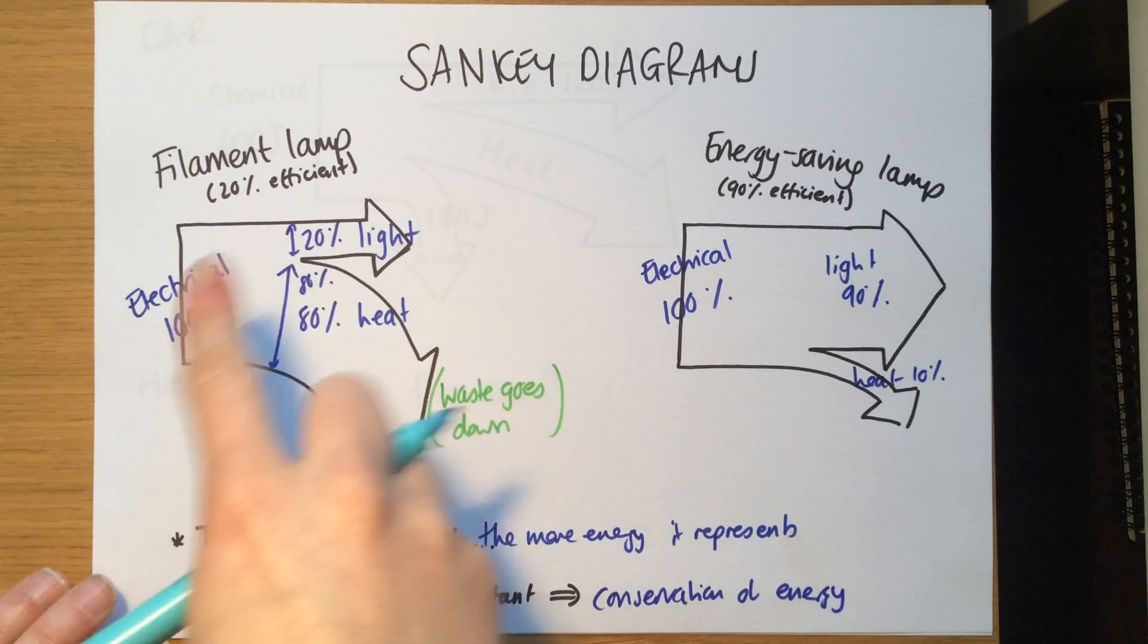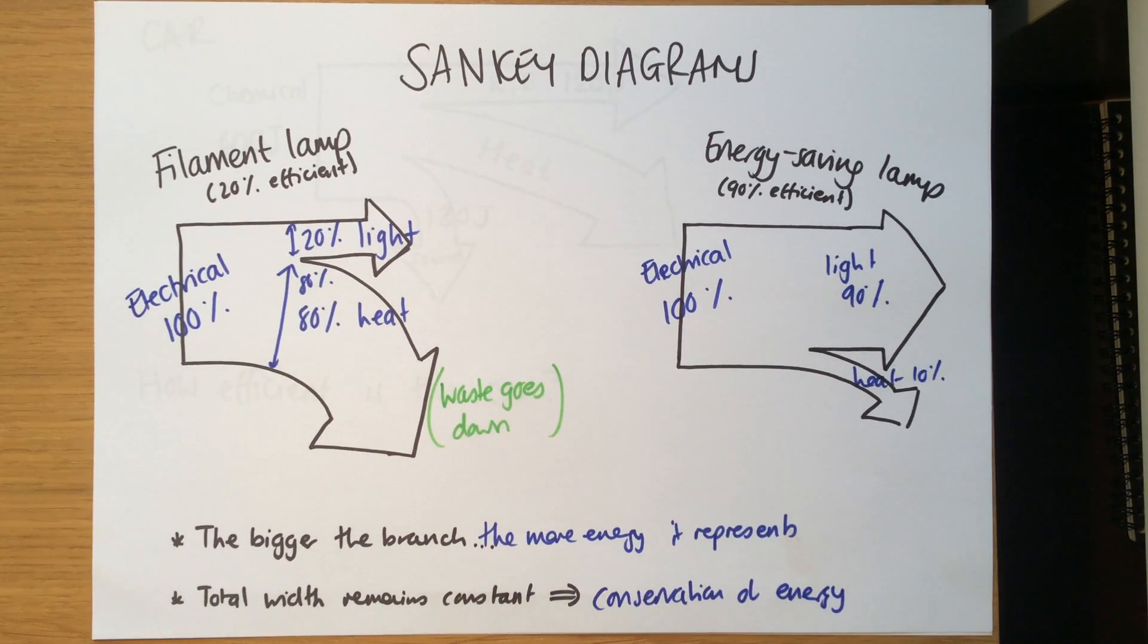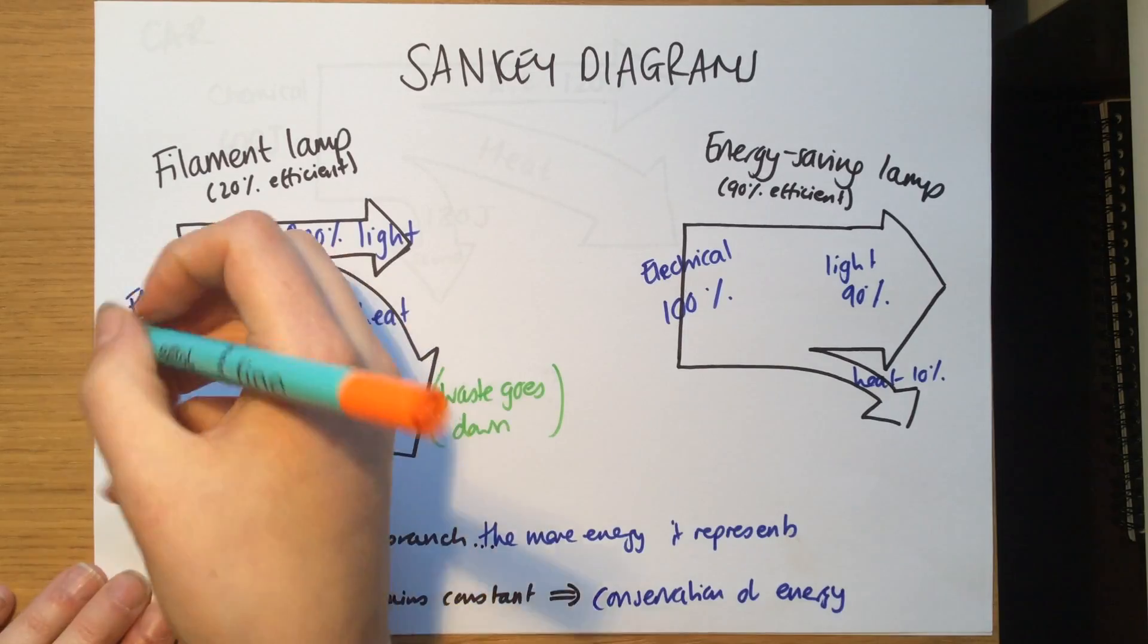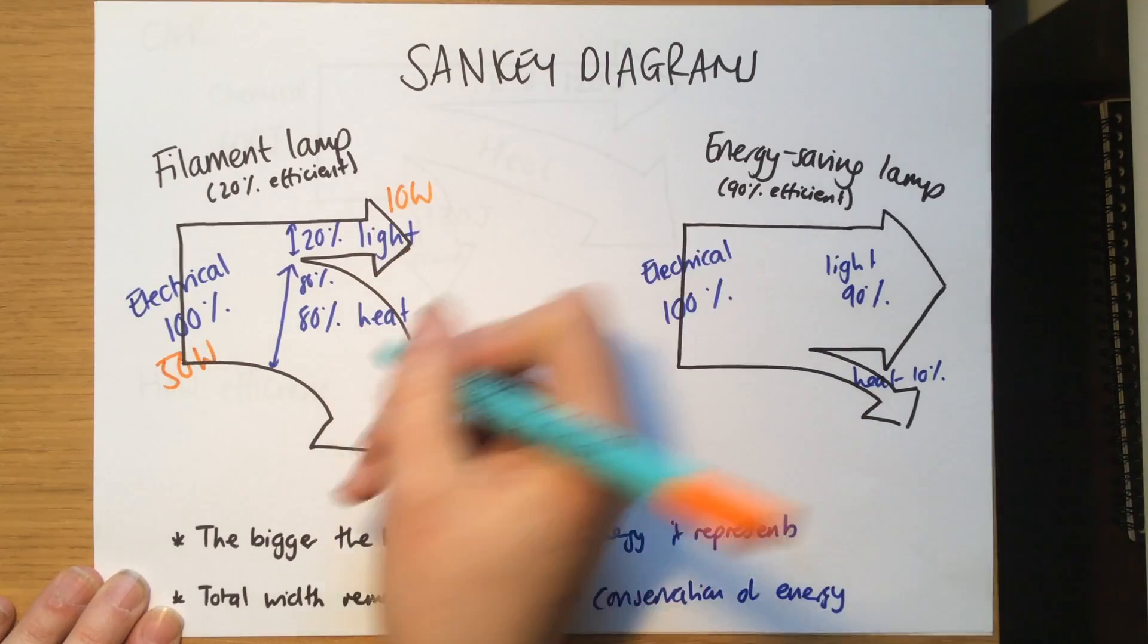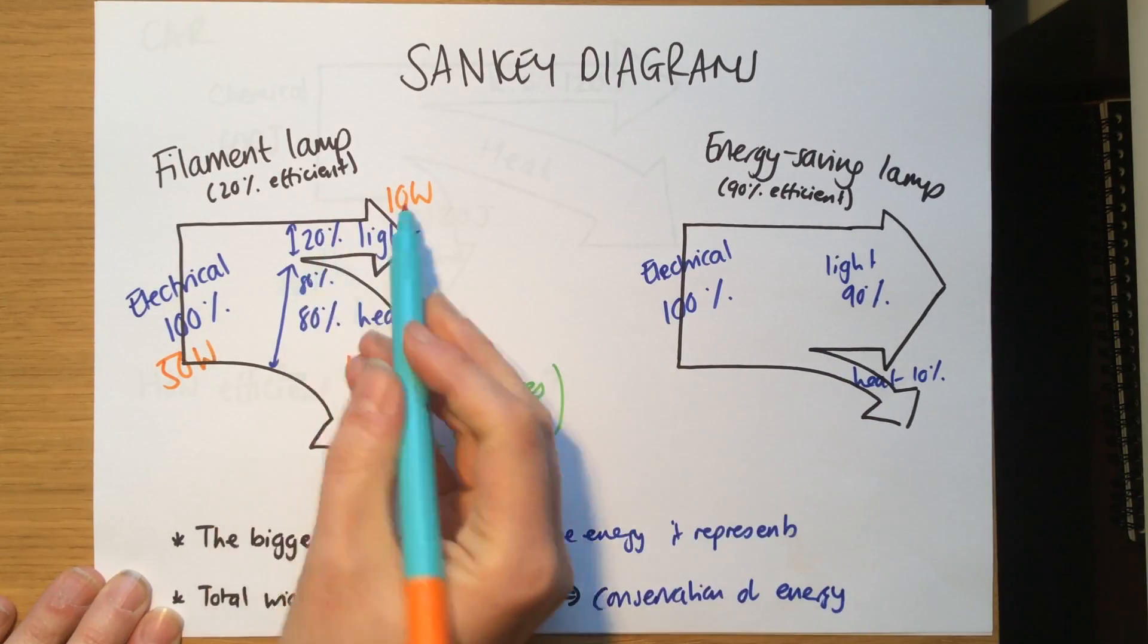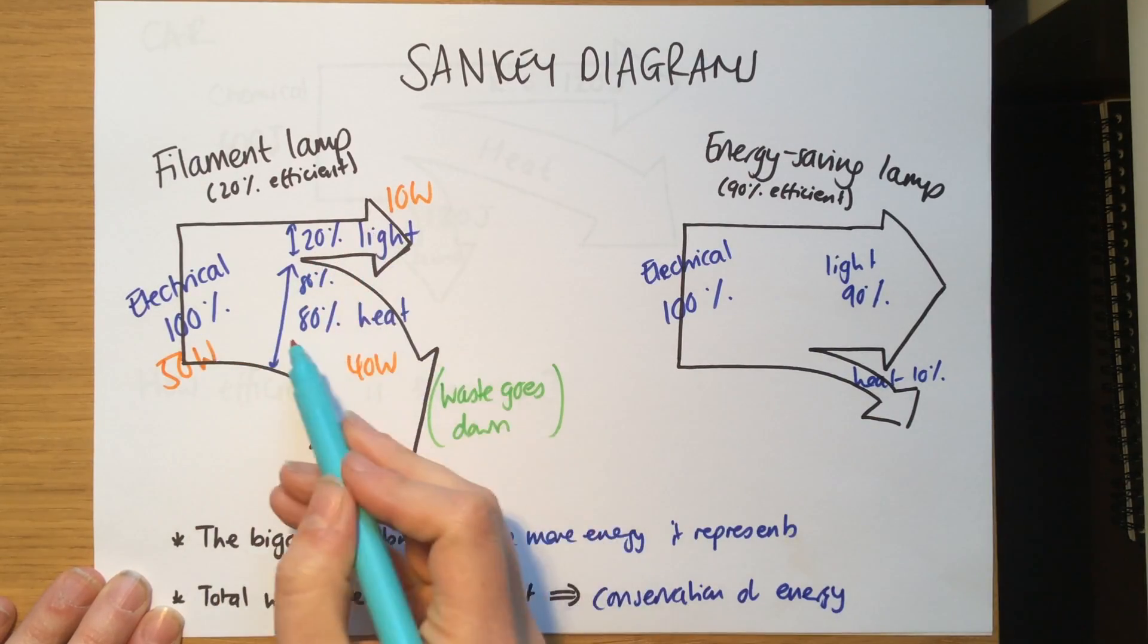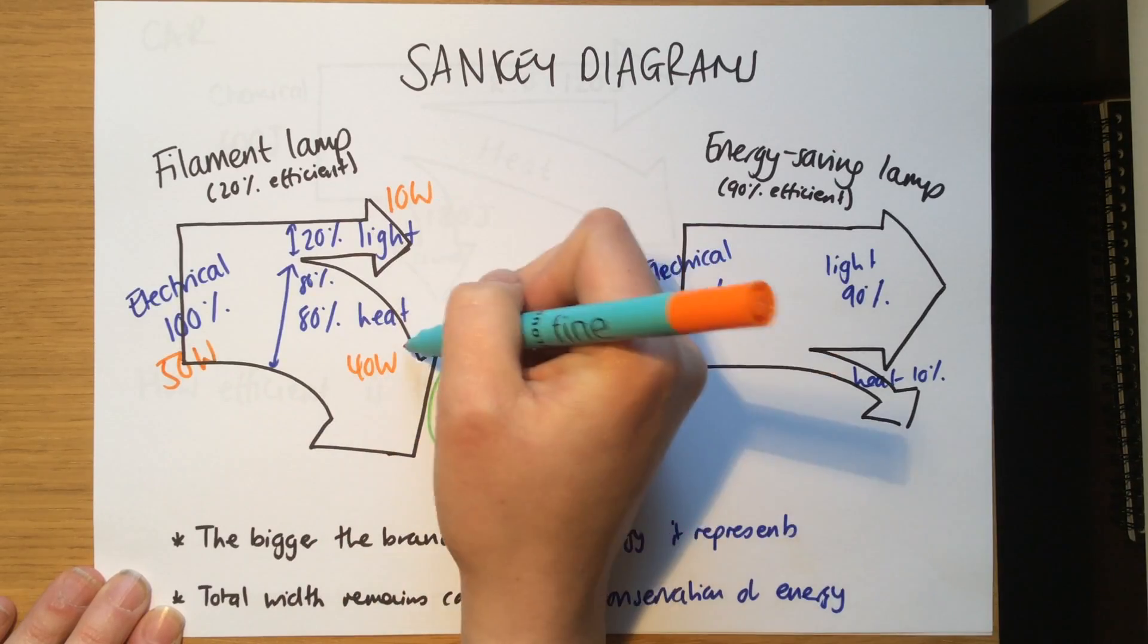So Sankey diagrams show me graphically how much energy is wasted. We can do it in percentages or we could write it in terms of joules. Let's say that this lamp uses 50 watts of power, this would require 10 watts and this will correspond to 40 watts, because 20 percent of 50 is 10 and 80 is 40. If we do 10 plus 40 equals 50.